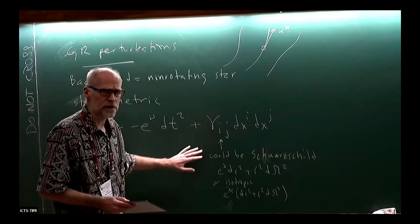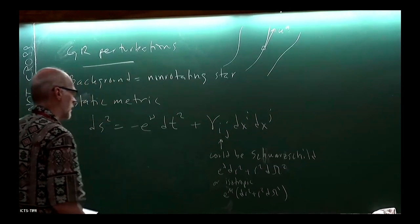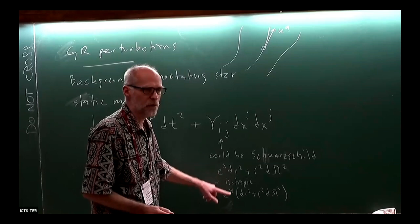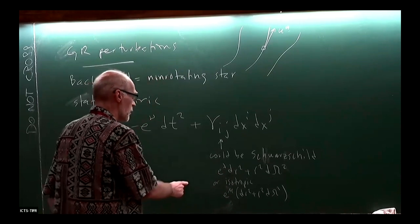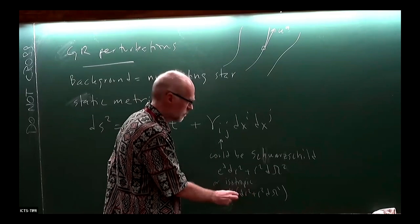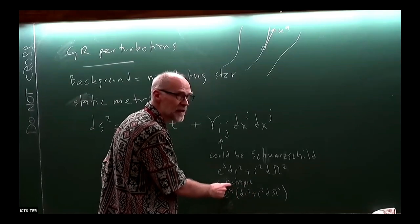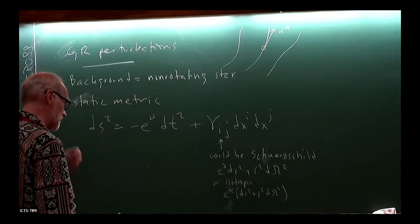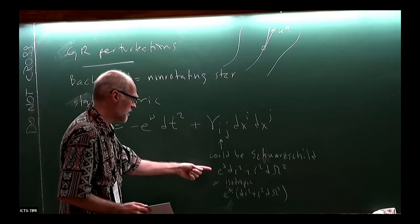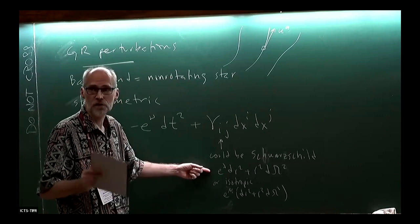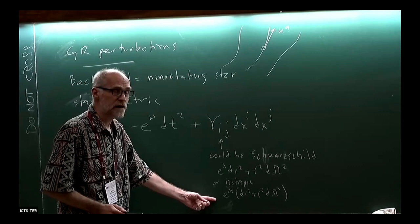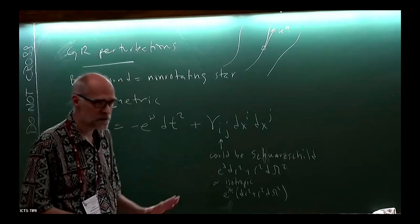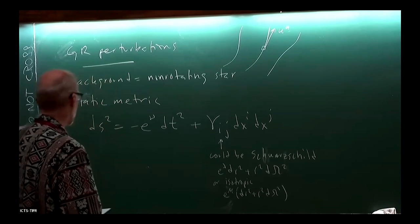I don't need to commit to one choice for what I'm doing. The isotropic form is actually how we typically do post-Newtonian expansions, because you have something that's really flat and everything lives there, and the conformal factor becomes the gravitational potential. This background problem is a textbook problem in Schwarzschild coordinates but is very rarely discussed in isotropic coordinates, because it's much harder to solve numerically — there's a technical reason for that.